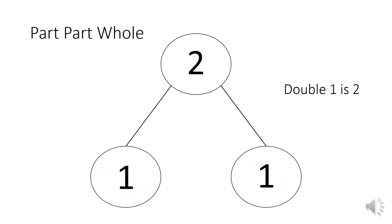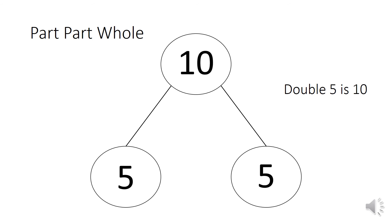We can also use numbers in our part-part-wholes — we don't have to draw pictures, we can write the numbers. On my screen I've got the number one in this circle and number one in this circle, making two groups of one. In the top circle, just like with pictures, we've got how much we have altogether: one and one make two. So double one is two. If you need help finding the total, you could draw next to it. Another example: five and five is ten, so double five is ten.